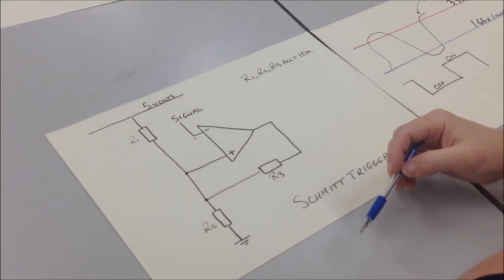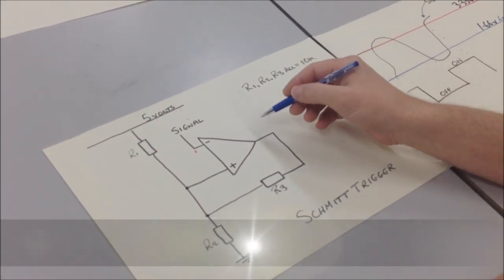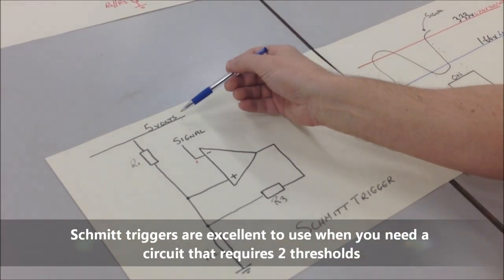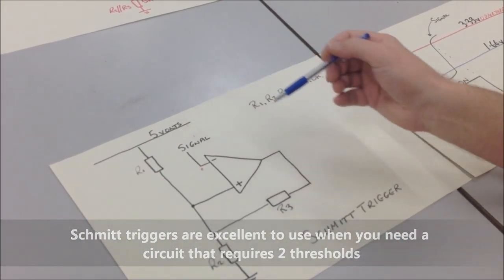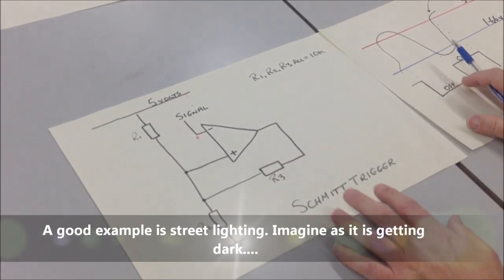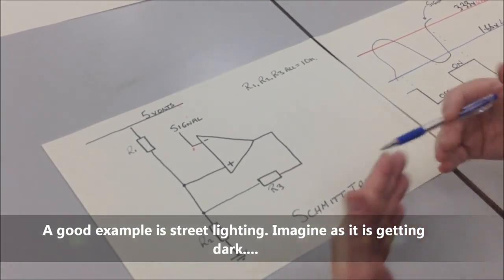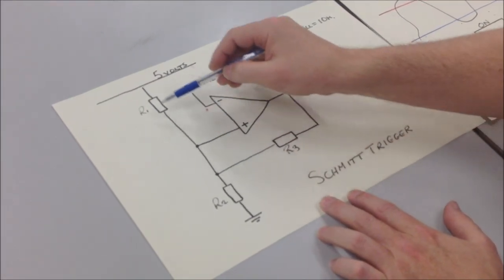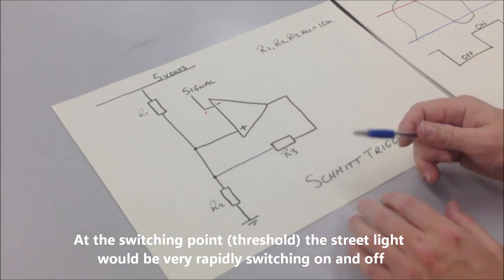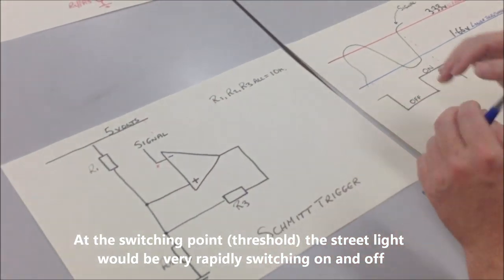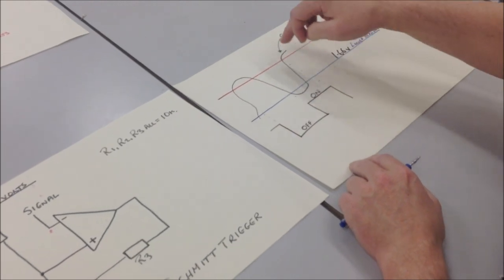A little bit about comparators. A comparator is either switched on or it's switched off. When it's on, it will have an output of 5 volts. When it's off, it will have an output of 0 volts, which is the same as ground. The way it works is R1 and R2 form a threshold voltage which stays steady.